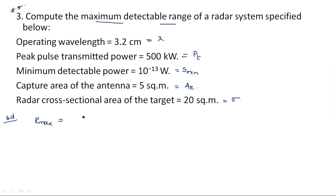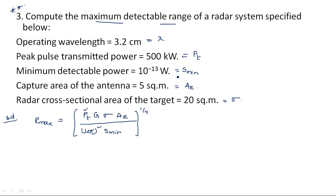Rmax is equal to [Pt · G · σ · Ae / (4π)²· Smin] to the power of 1/4. Now let us check whether all the given values are available. Pt is given. G — gain is not given. σ is given. Ae is given. Minimum detectable signal Smin is also given. In the previous problem, G was given but Ae was not given; here Ae is given but G is not given.